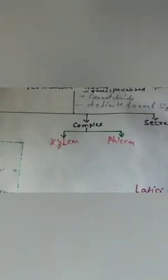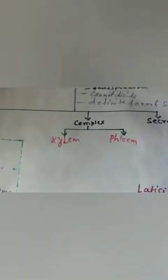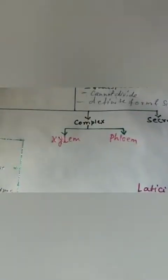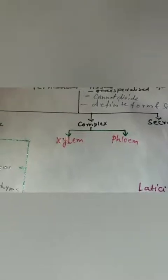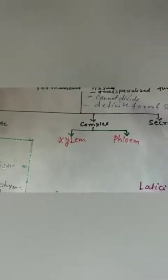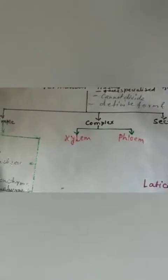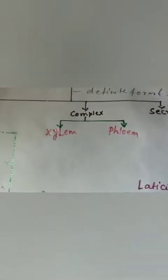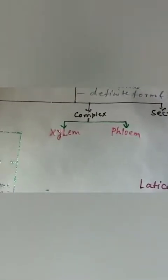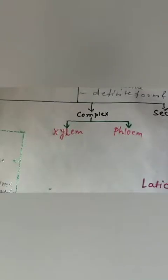Now let's read about complex tissues. Complex permanent tissues are formed of more than one type of cells which perform different functions. There are two types: xylem and phloem.